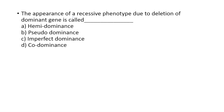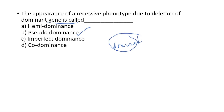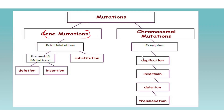Question: The appearance of a recessive phenotype due to deletion of a dominant gene is called what? The answer is pseudo-dominance. When the dominant gene is deleted, the recessive gene mimics the expression of the dominant gene — this condition is called pseudo-dominance.